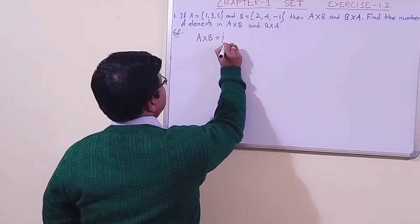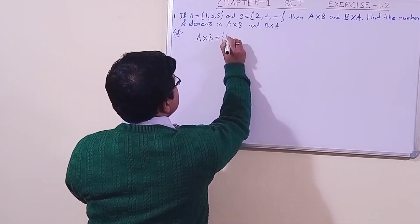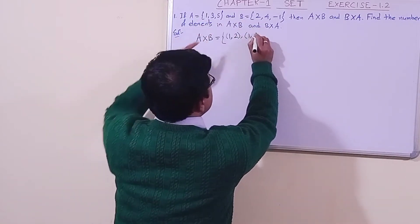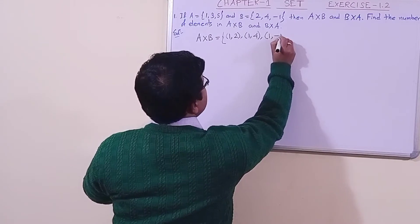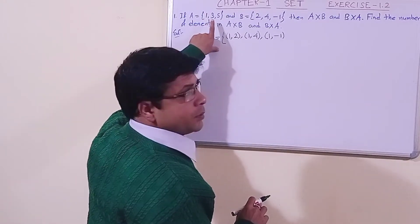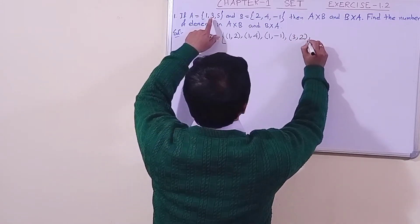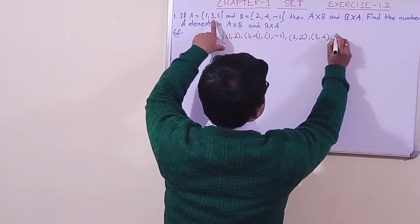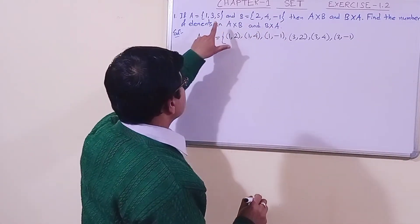Let us make the ordered pairs. Element 1 should be connected with each individual element of B: so 1 is paired with 2, then 1 is paired with 4, then 1 is paired with minus 1. Now moving to the second element: 3 is paired with 2, then 3 is paired with 4, then 3 is paired with minus 1.